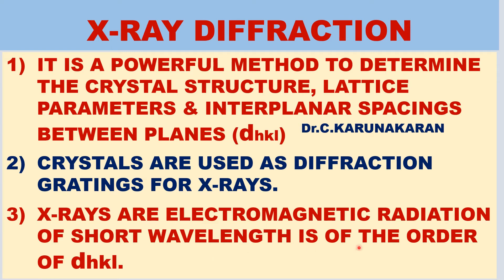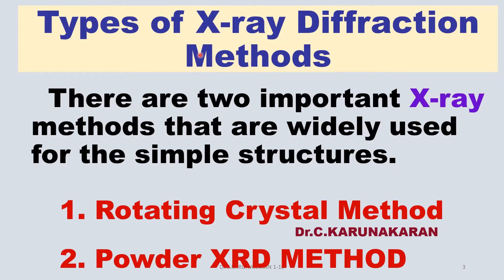That is why crystals are used as diffraction gratings for X-rays. In addition to X-ray diffraction methods, there are electron diffraction and neutron diffraction methods. There are two types of X-ray diffraction methods widely used for studying crystal structures: the rotating crystal method and the powder method or powder XRD.